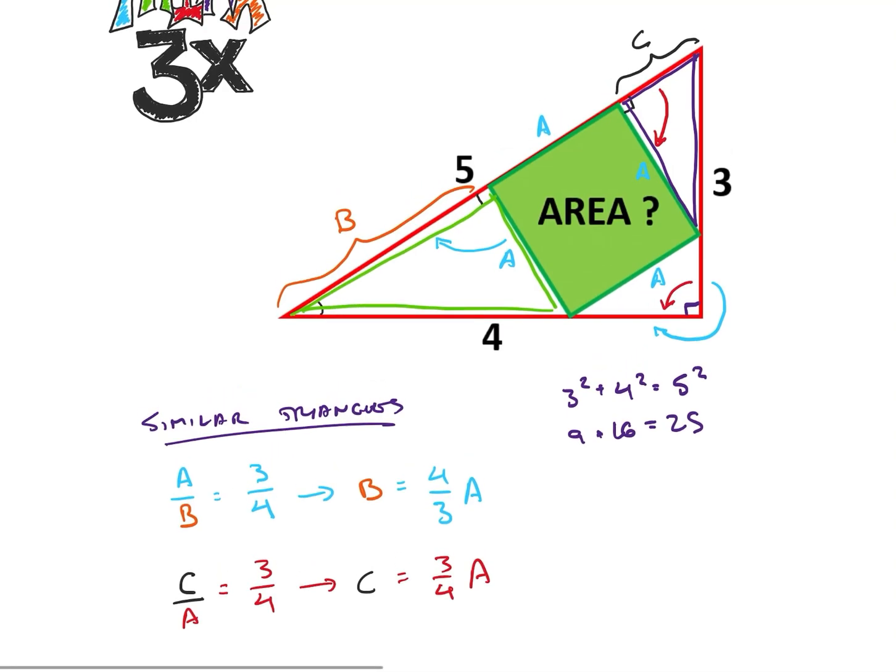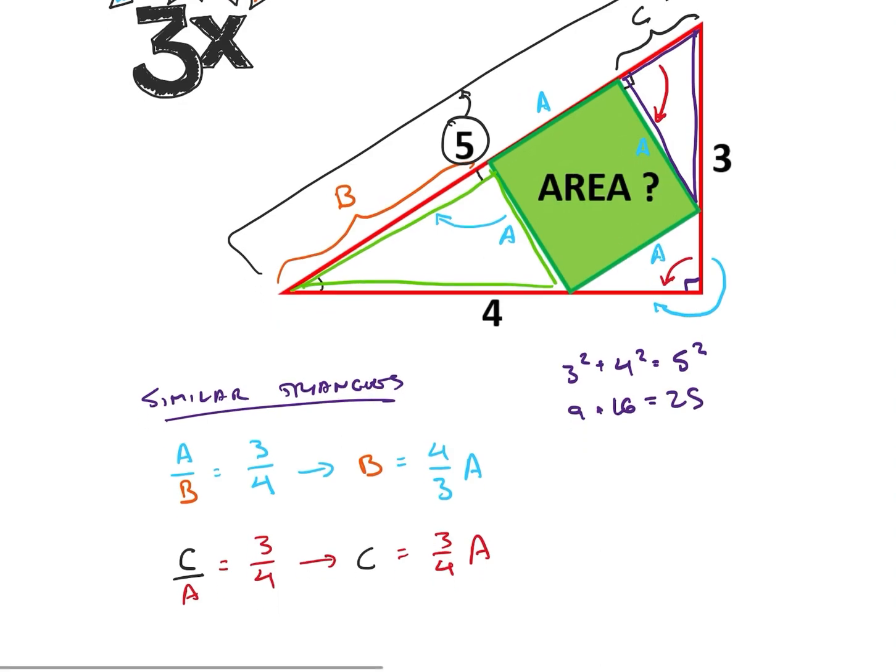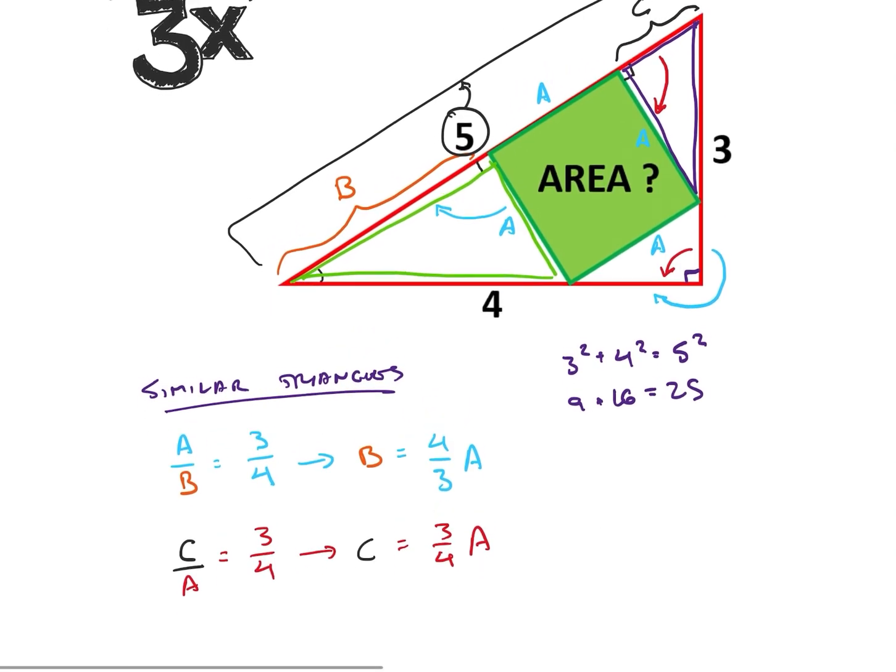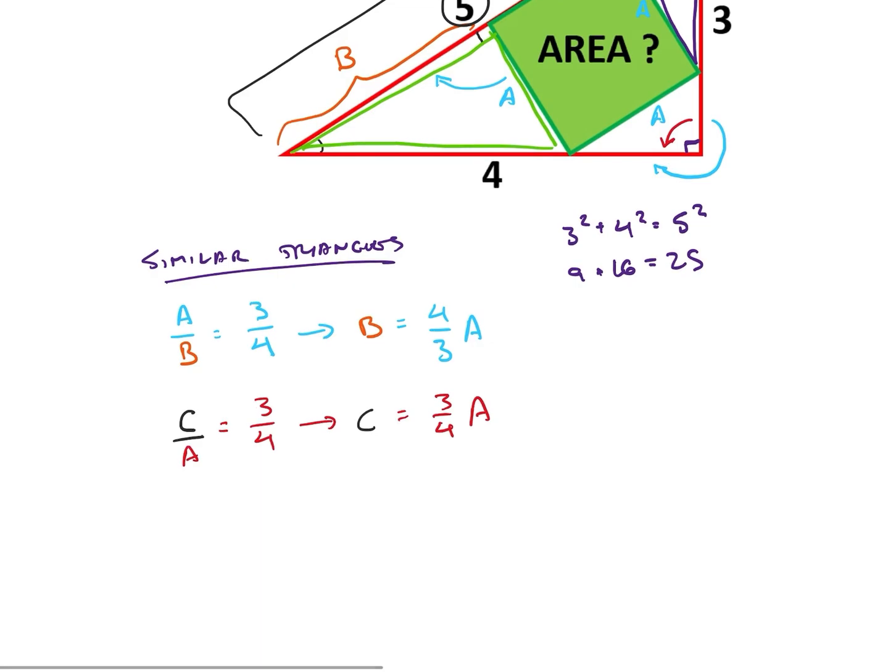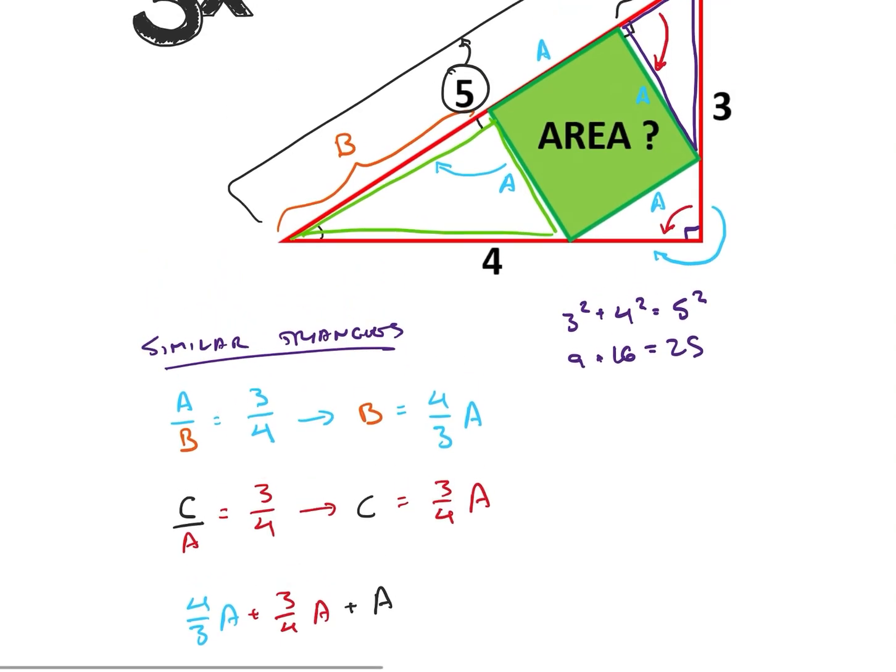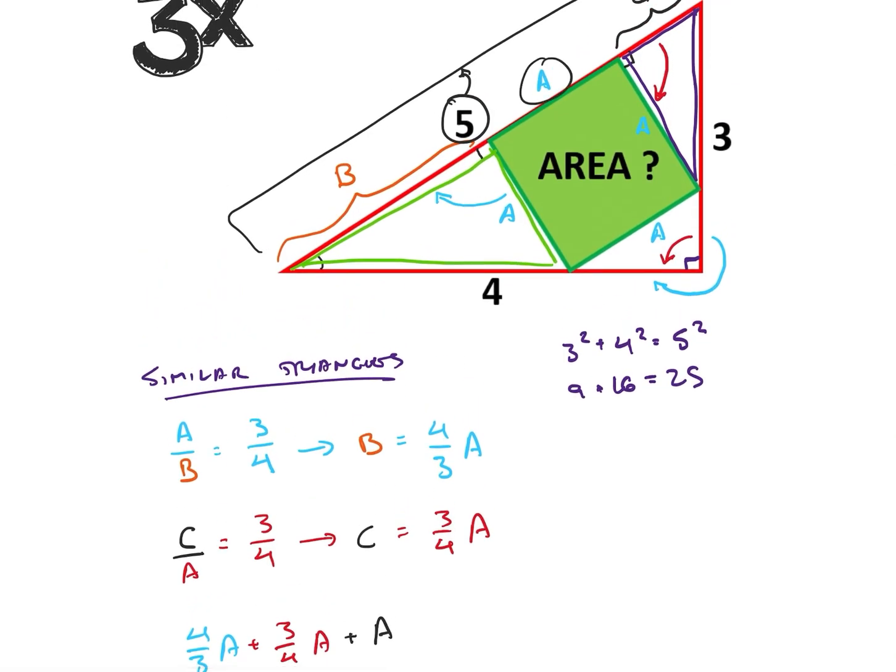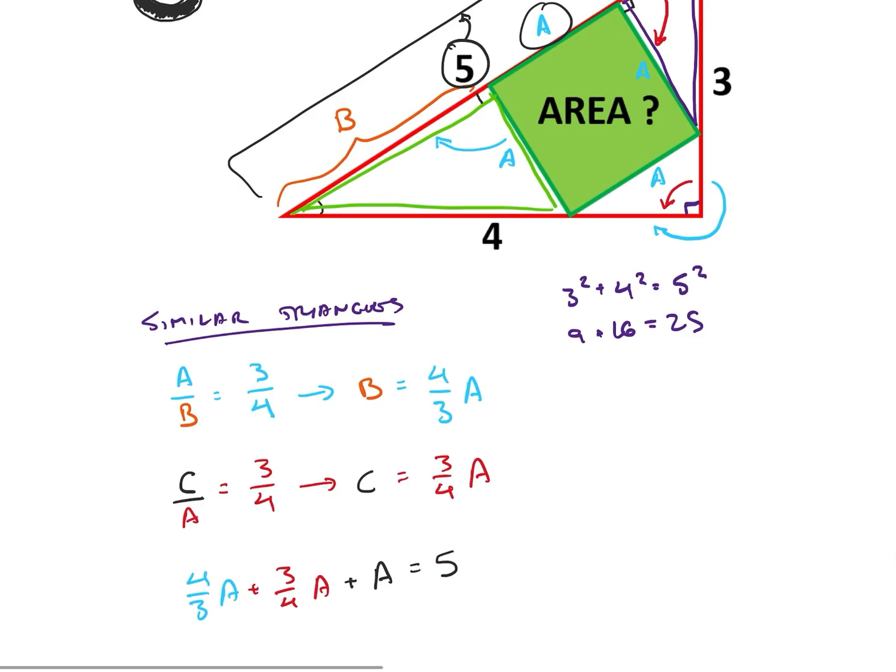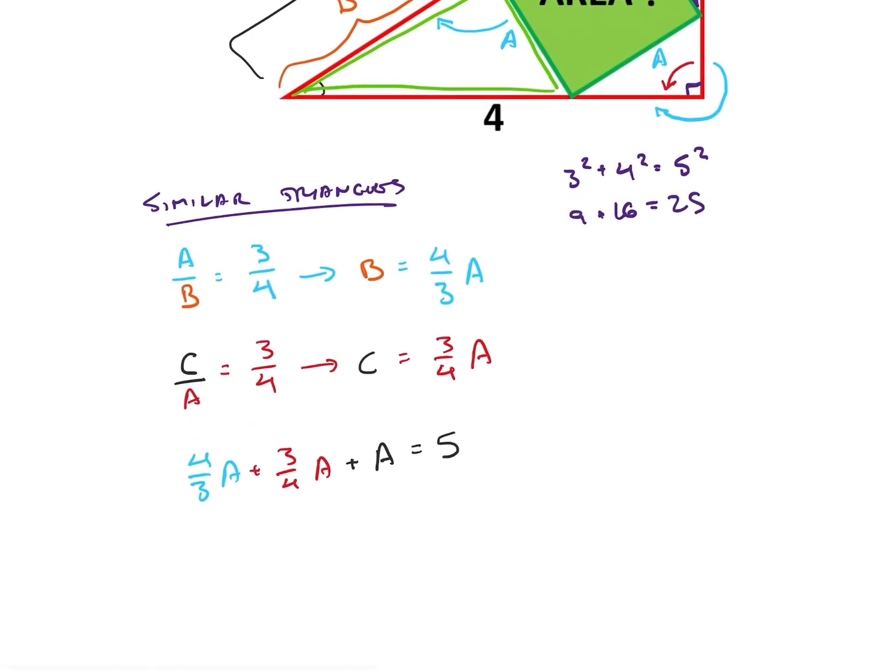But we know that this entire length of this side over here is five. So it looks like I can just take b plus a plus c is equal to five. So what is b plus a plus c? Well, it's four over three a plus three over four a plus just our side a. So if we know these three are going to be equal to five, we can now solve for a. That's going to factor out that a. We're going to get four thirds plus three quarters plus one is equal to five.